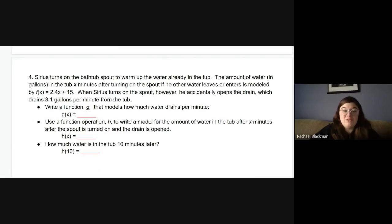So I'm going to read through it real quick. Sirius turns on the bathtub spout to warm up the water already in the tub. The amount of water in gallons in the tub x minutes after turning on the spout, if no other water enters or leaves, is modeled by this function. That was a lot of words. Basically, it's just saying that when you turn on the tap, this function 2.4x plus 15 is going to model how much water is in it.